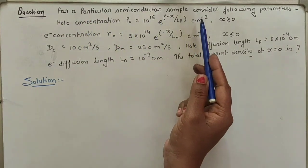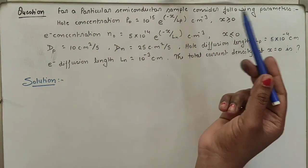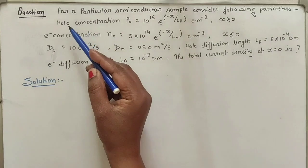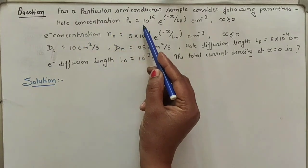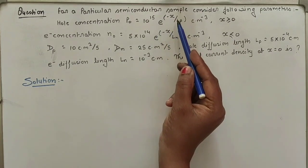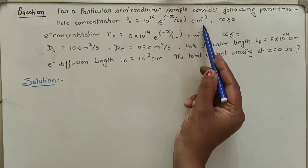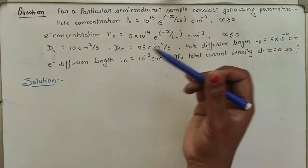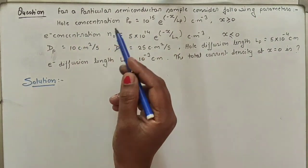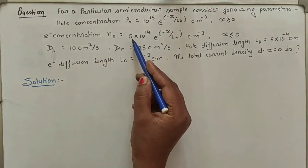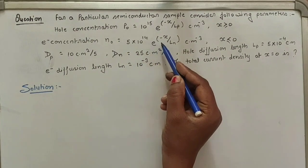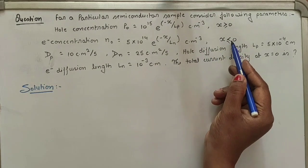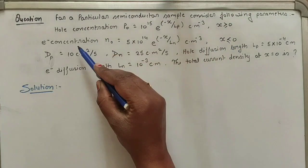For a particular semiconductor sample, consider the following parameters. Hole concentration p₀ is equal to 10 to the power of 15 times e to the power of minus x upon Lp, per centimeter cube, when x is greater than or equal to 0. Electron concentration n₀ is equal to 5 into 10 to the power of 14 times e to the power of minus x upon Ln, per centimeter cube, when x is less than or equal to 0.